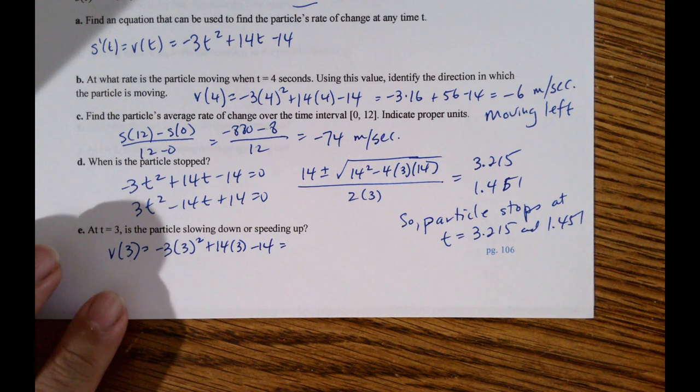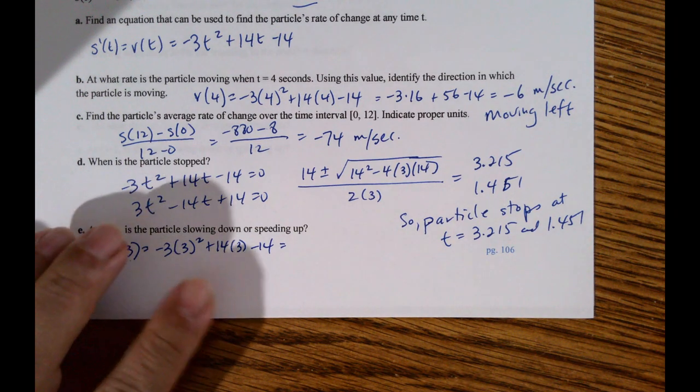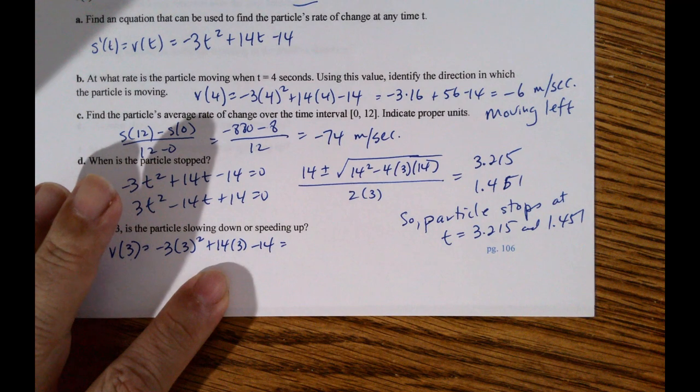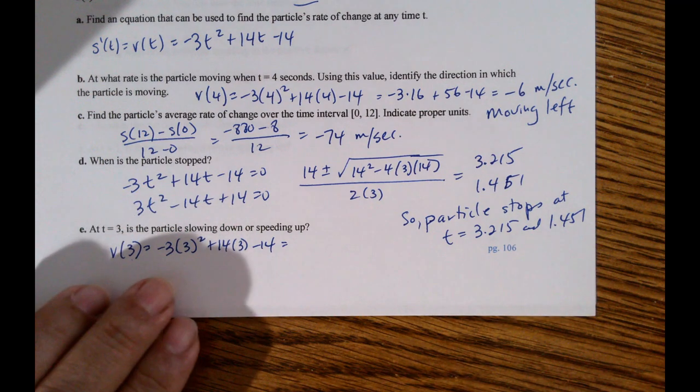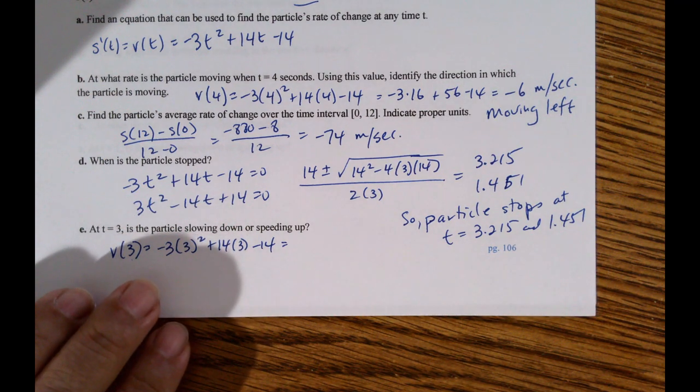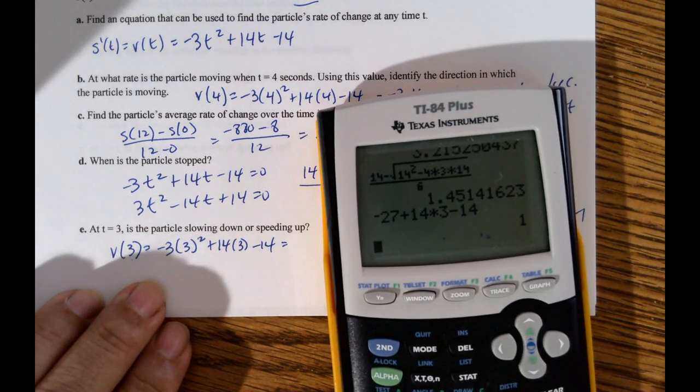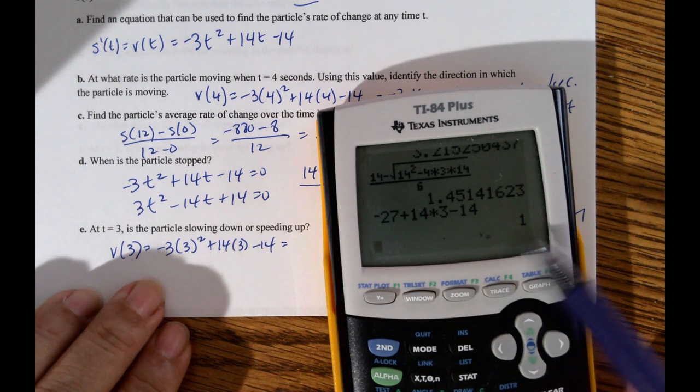I'm using the calculator here. Negative 27 plus 14 times 3 minus 14. I'm surprised by a 1.